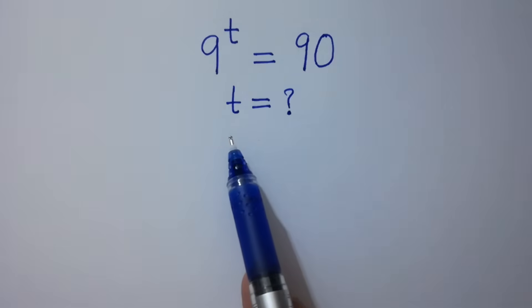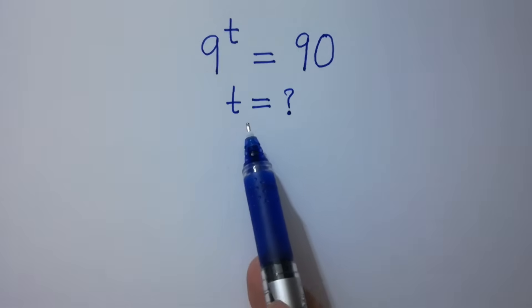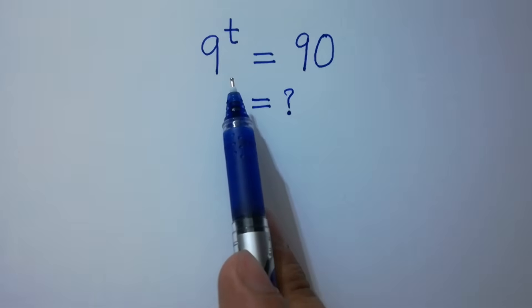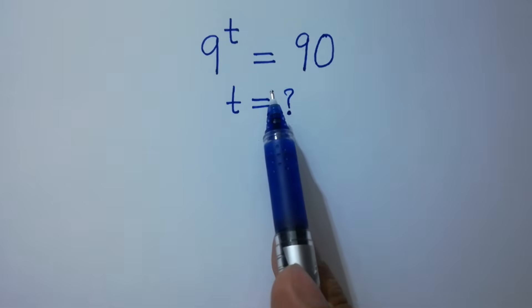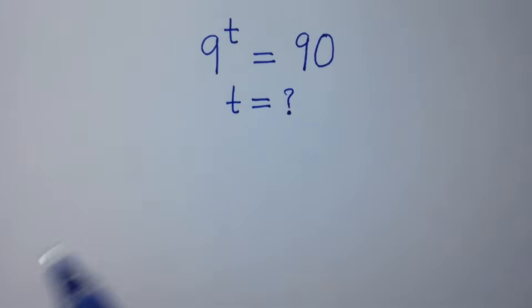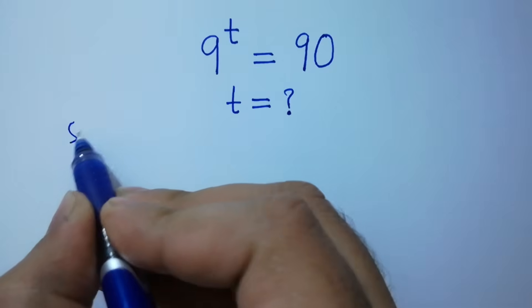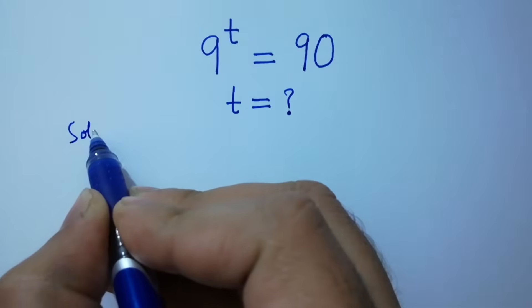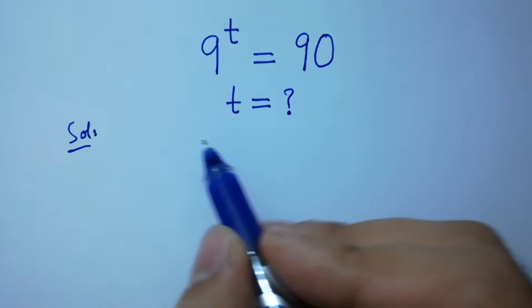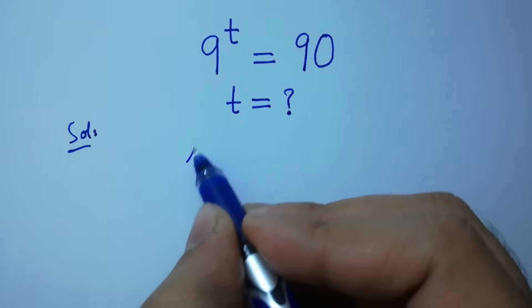Hello friends. Find the value of t if 9 to the power t equals 90. Let's have a solution. Take log on both sides.